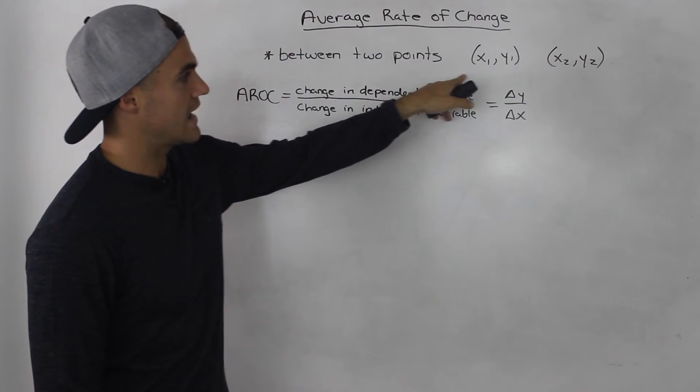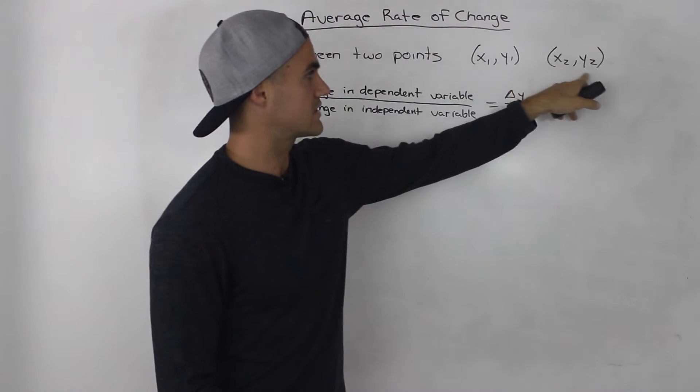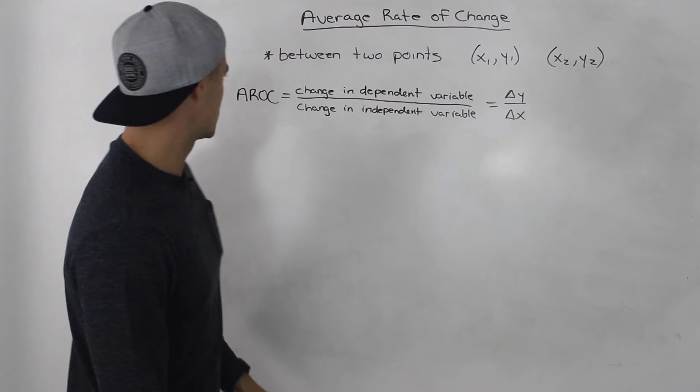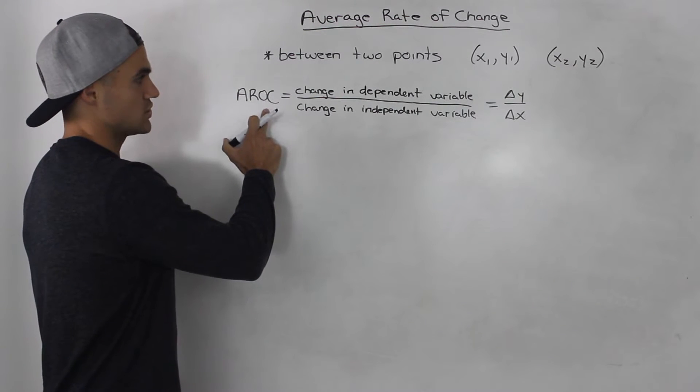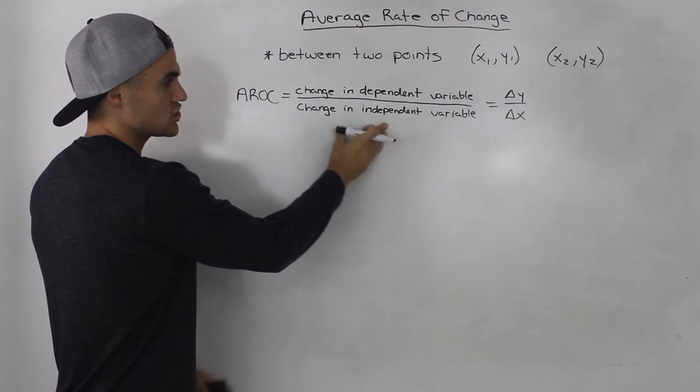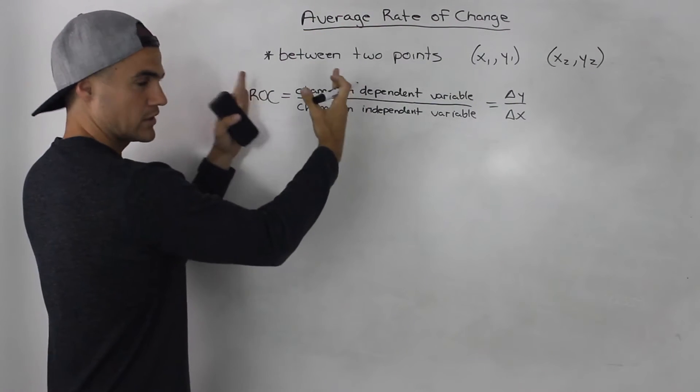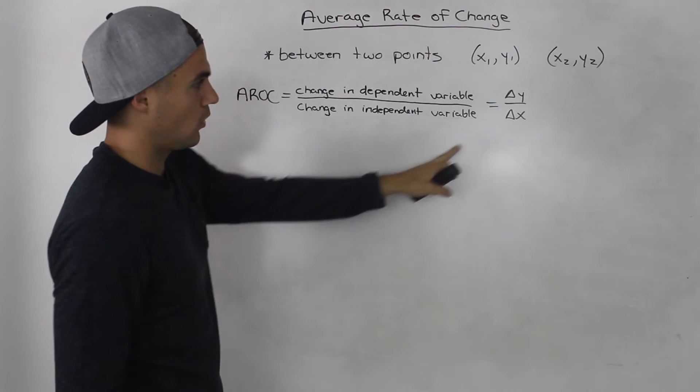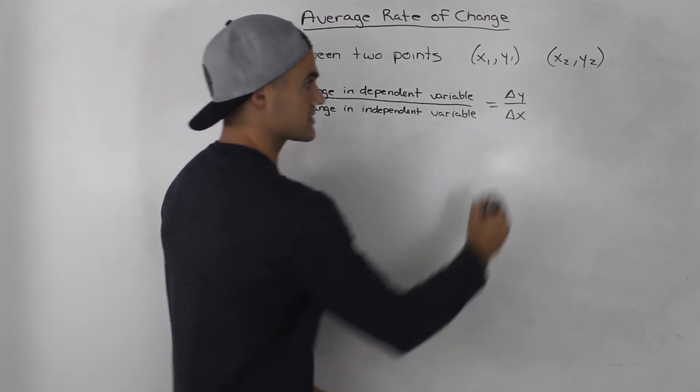So the points (x1, y1) and the points (x2, y2). Average rate of change is basically the change in the dependent variable over the change in the independent variable between those two points, or delta y over delta x.